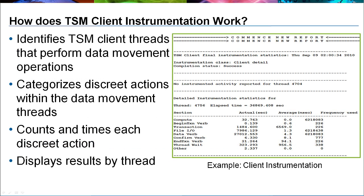TSM client instrumentation is a tool used to help resolve performance problems. It is useful for problems that involve TSM client operations like backup and restore. In most cases, it should be used in conjunction with TSM server instrumentation. It works by identifying TSM client internal processing threads pertinent to data movement operations, categorizing each discrete function within these threads, counting invocations, and calculating total time spent on each function. The resulting statistics are displayed in a tabular format for each data movement thread identified.